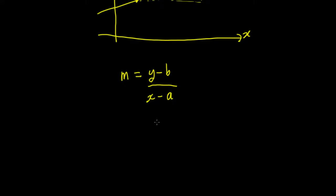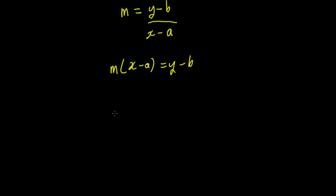Now we can rewrite that. If we multiply both ends by x minus a, you're going to end up with m times x minus a equals y minus b. So that's usually written out around the other way, so usually it's y minus b equals m times x minus a.